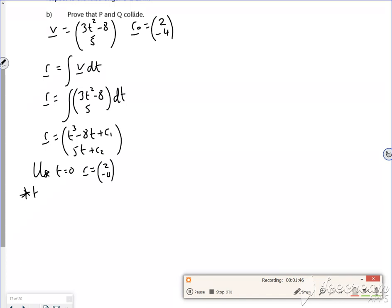So looking at the top line, 2 is equal to 0 cubed minus 8 lots of 0 plus c1, so 2 is c1. So looking at the bottom line, really I should put the i component there, shouldn't I? And the j component. But looking at the bottom line, that's minus 4.